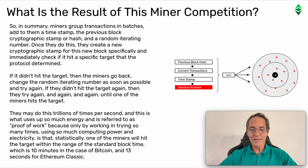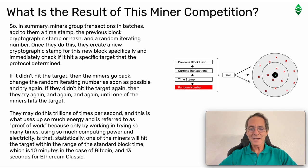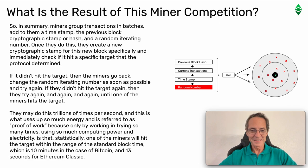If it didn't hit the target, then the miners go back, change the random iterating number as soon as possible, and try again. If they didn't hit the target again, then they try again and again and again until one of the miners hits the target.